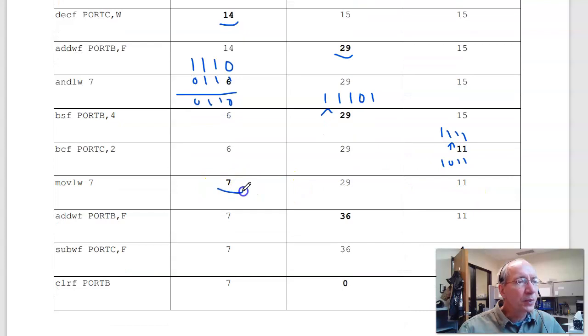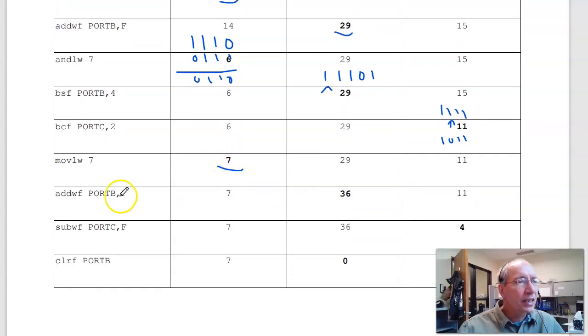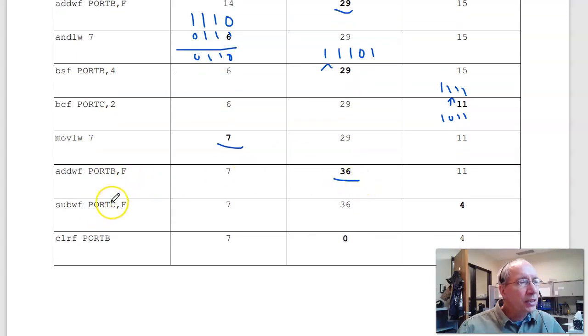Move 7 to W. Add port B to W, put the result in port B. 7 plus 29 is 36. Subtract W from port C, put the result in port C. 11 minus 7 is 4. Answer goes in port C, and clear port B.